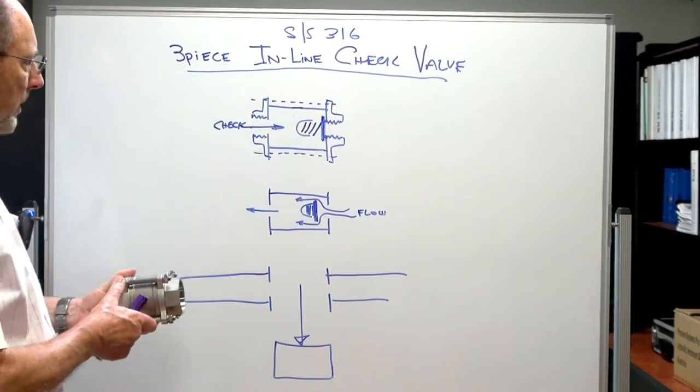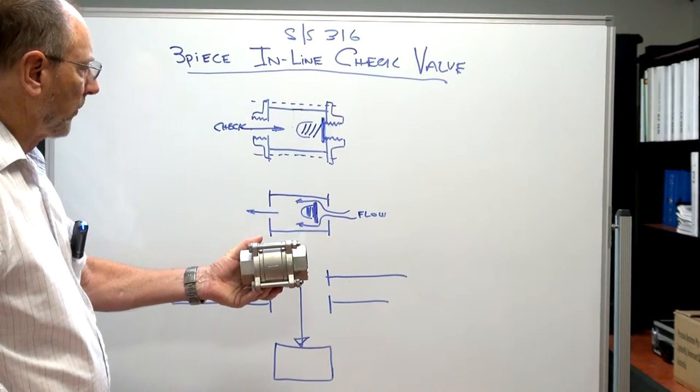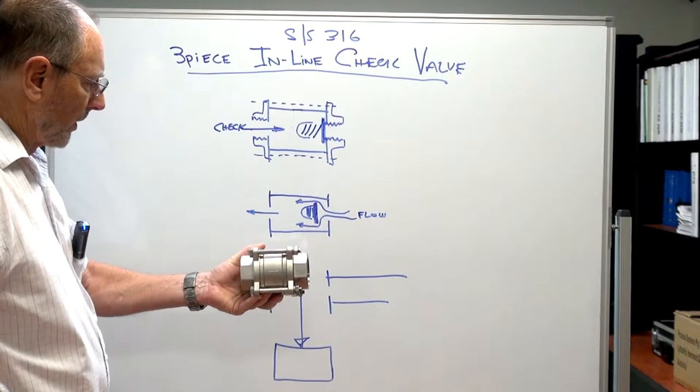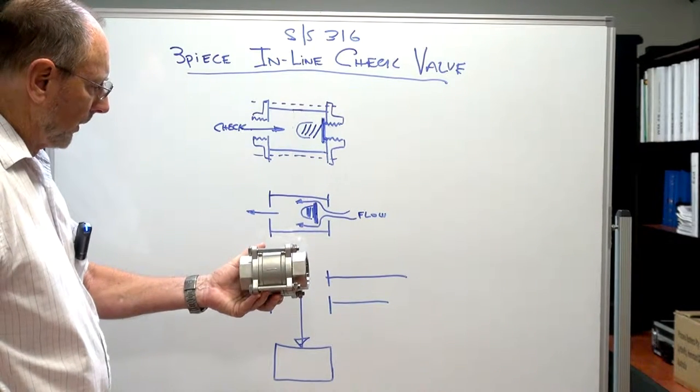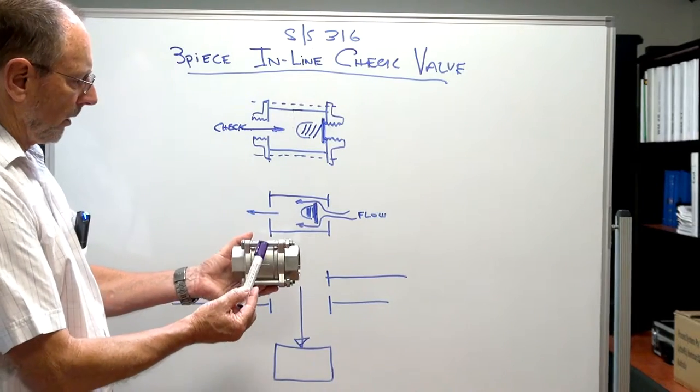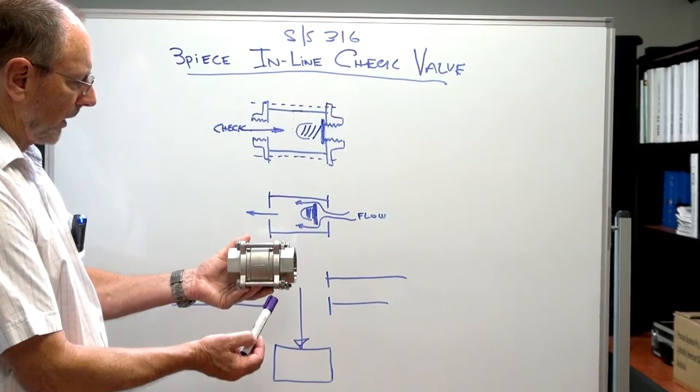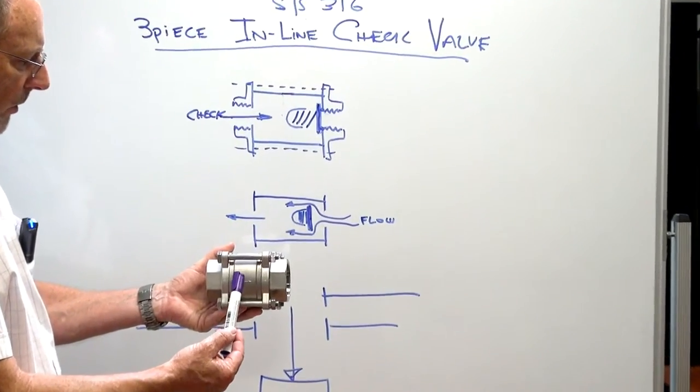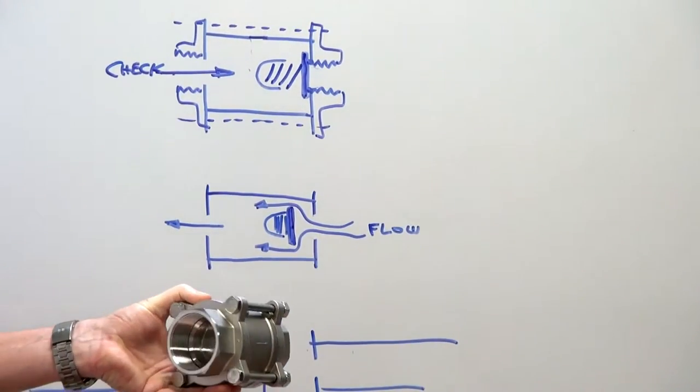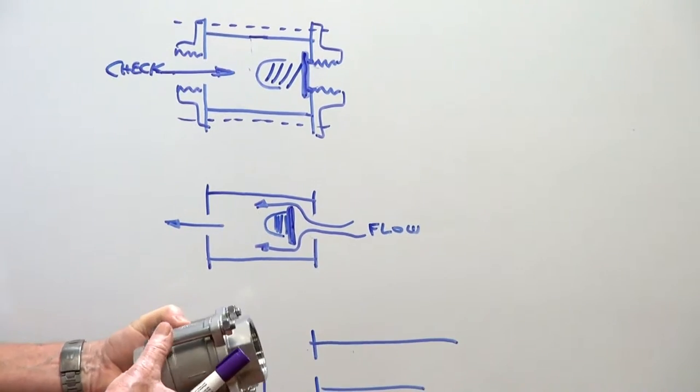This is a three-piece inline stainless steel check valve. It comes in a variety of sizes from half inch upwards to four inch. Being three-piece, you've got tie rod connections here. The check assembly is internal inside the valve and it's threaded either end like this.